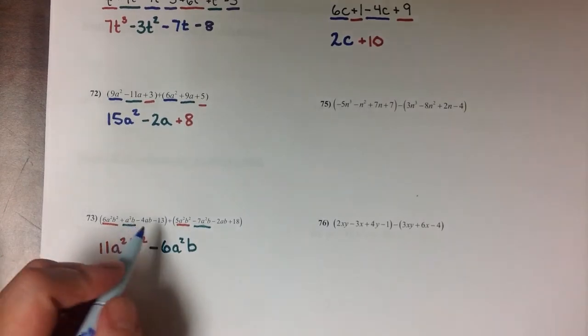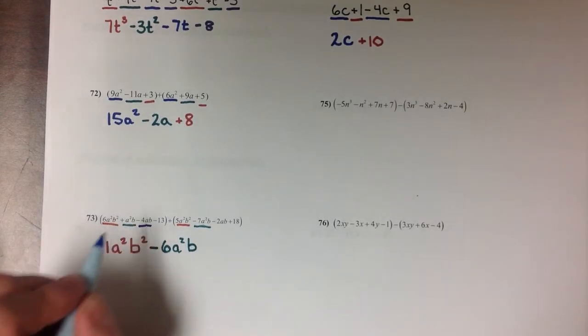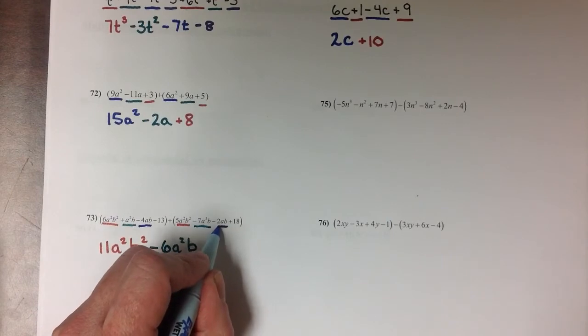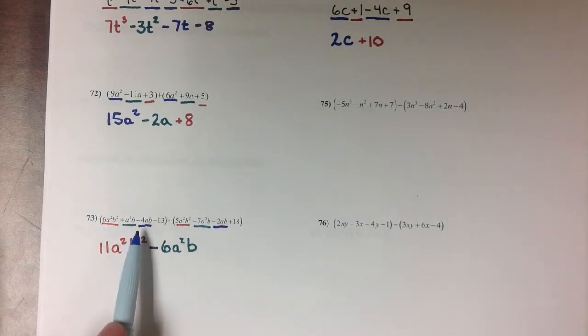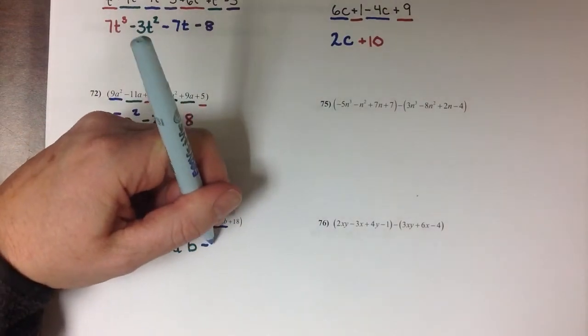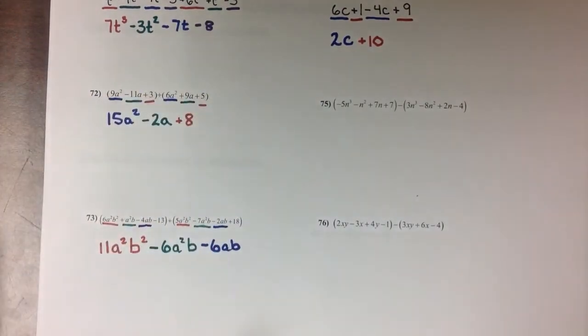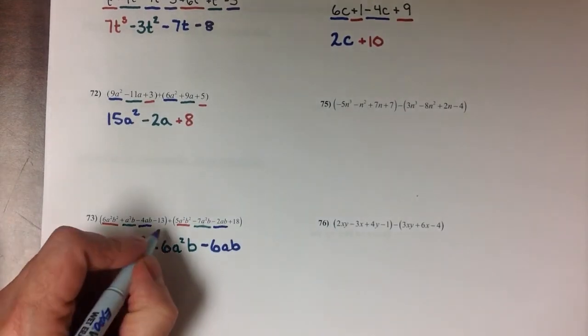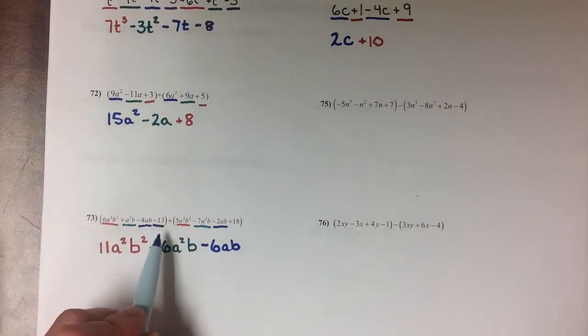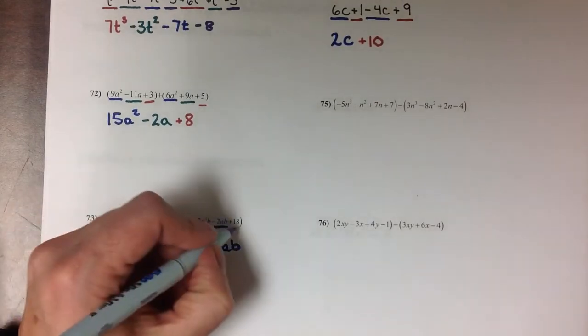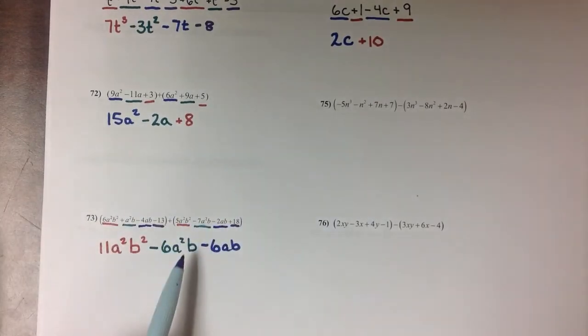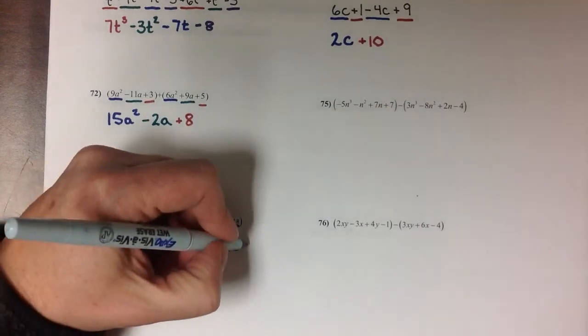The next term in my first polynomial is an ab. And this one also has an ab. So -4ab's minus 2 more is going to give me a total of -6. And then my final term is the constant term. -13, positive 18 is going to give me a total of positive 5.